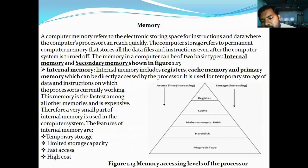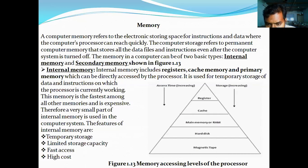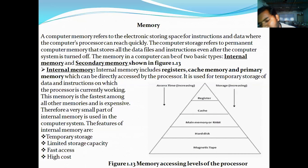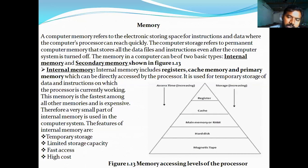Also hard disk and magnetic storage. To access the memory, first you access registers, then cache memory, then RAM or main memory — that is primary memory — and then secondary storage and additional devices. This diagram shows how the processor accesses memory at different levels.